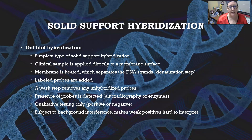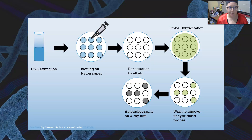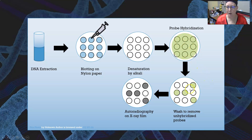This is a qualitative test only — you get positive or negative. It is subject to background interference, which makes weak positives hard to interpret. In the illustration, sample DNA is extracted and blotted in small circles onto the membrane, denatured by alkali, then incubated with labeled probes. The probes hybridize to dots containing the gene of interest, unhybridized probes are washed off, and autoradiography on X-ray film detects where the labeled probes are.